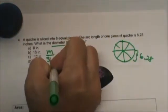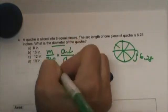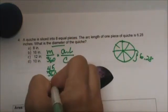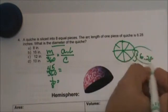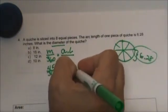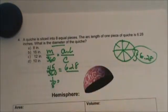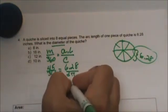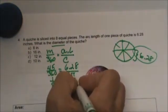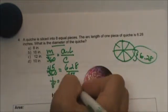So it's 45 degrees over 360, or if you prefer you could just write 1 eighth because we know it's 1 out of 8 slices. The arc length is given as 6.28 and the circumference remember is d pi. I'm just going to plug d pi in there. I like dealing with d pi rather than just circumference or 2 pi r.